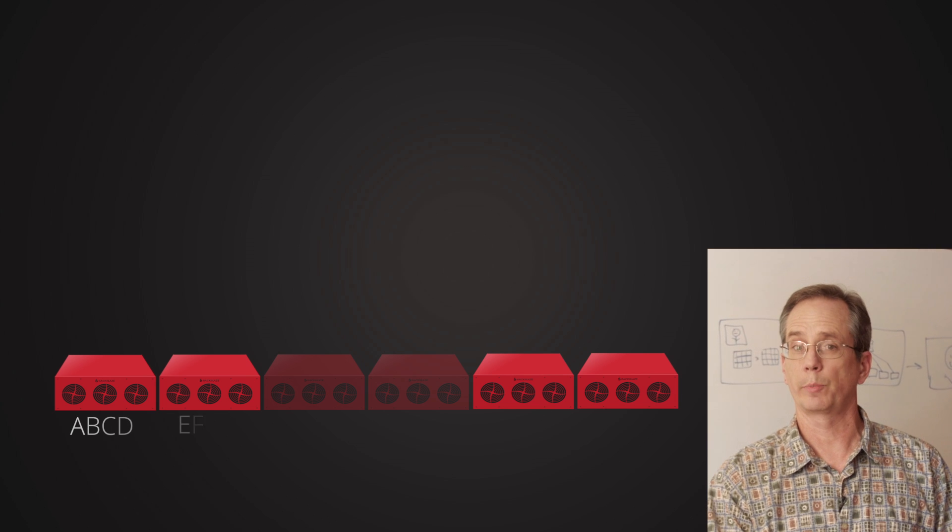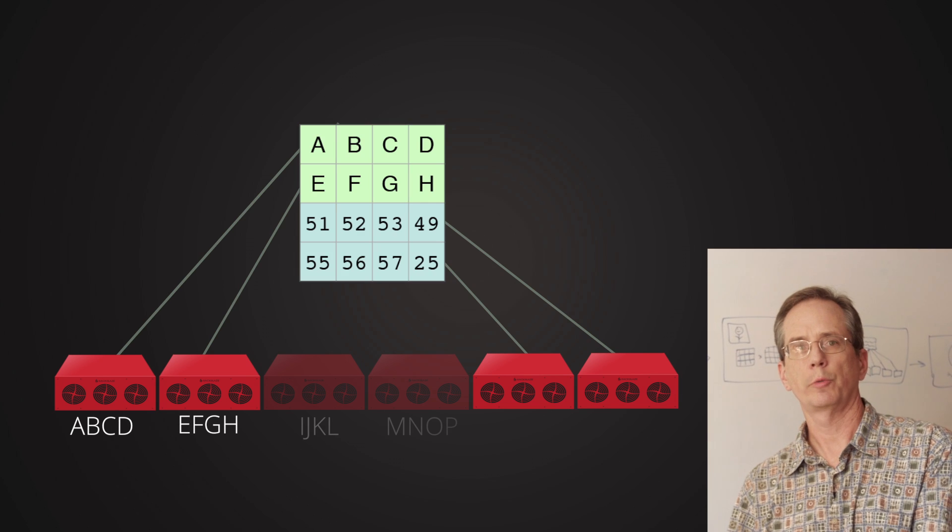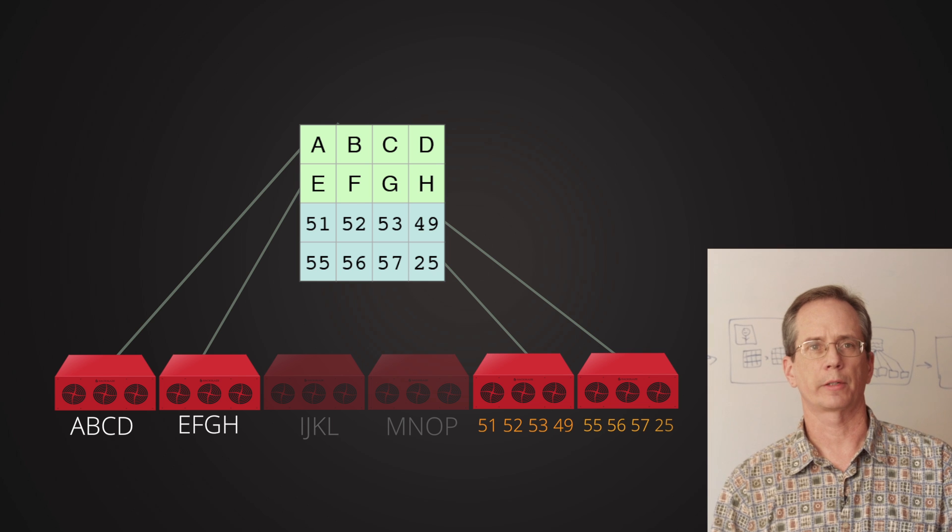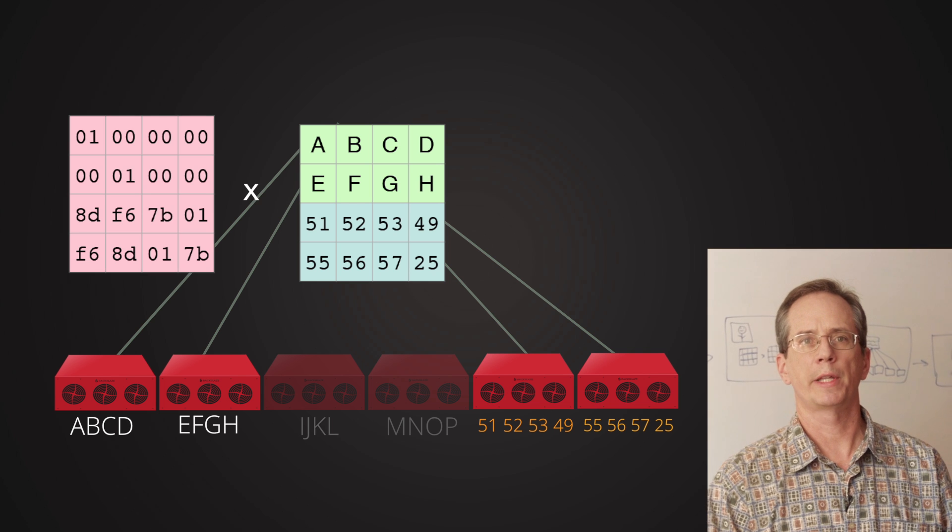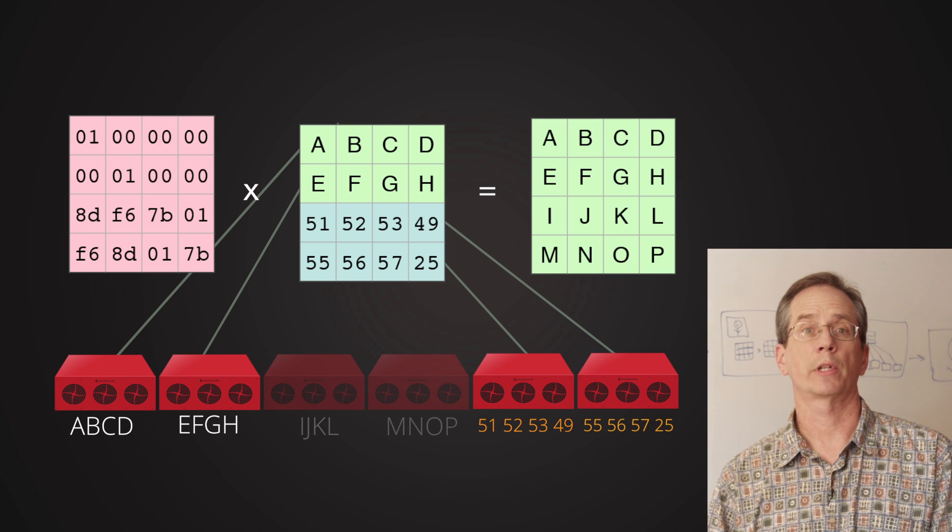This diagram shows an overview of how that all works. You've got the two servers in the data center with the two parts of your file. You've got the two parity shards. They come down to form the matrix, multiply by the inverse, and voila, you've got your original file.